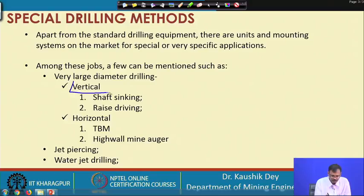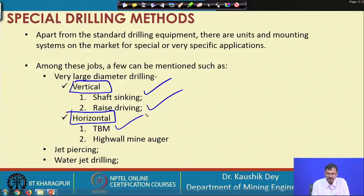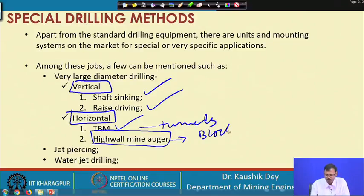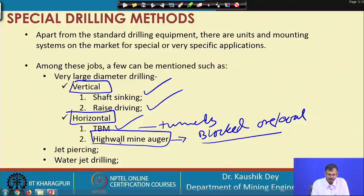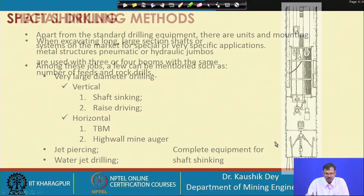Large diameter drilling may be vertical — either for shaft sinking or for raise driving — or horizontal, such as for tunnel boring machines where tunnels are constructed, or for high wall miner augers where blocked rock or coal masses are extracted. Two other special methods are flame cutting and water jet cutting. These are the special drilling methods practiced in different specific conditions.